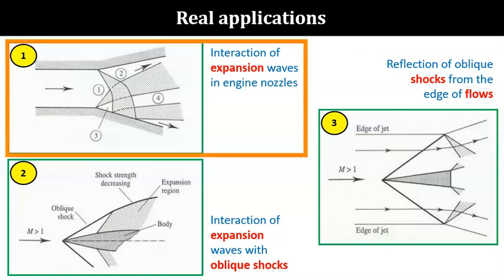In figure 1, we can see interactions of expansion waves inside a tube with a diverging channel. In real cases, we can see such flows inside rocket or engine nozzles.